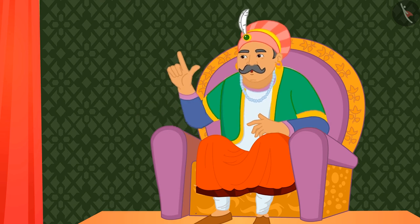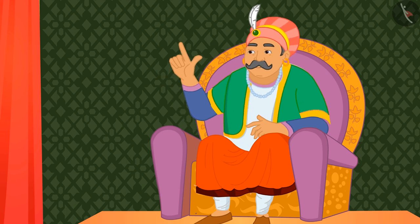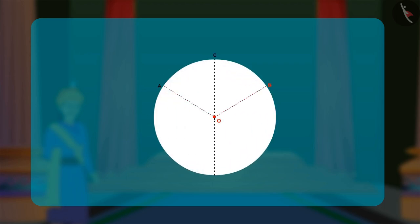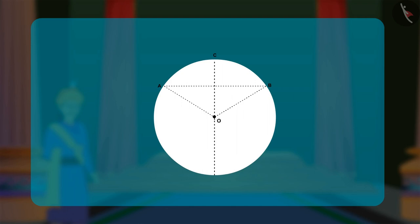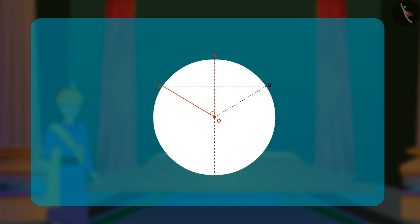Akbar asked, 'How will you show a radius that bisects the angle between two radii?' Birbal explained this by folding two radii, AO and BO, using the paper. He then folds the chord AB as shown. Again, he folds the bisector OC of the angle between the radii AO and BO, proving that angle AOC is equal to angle BOC.